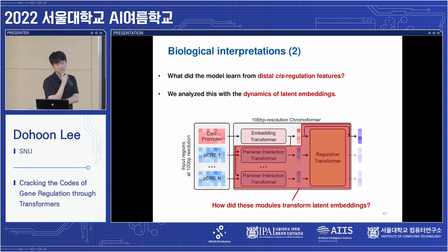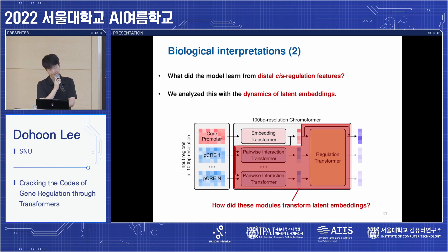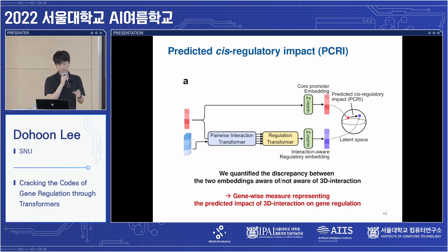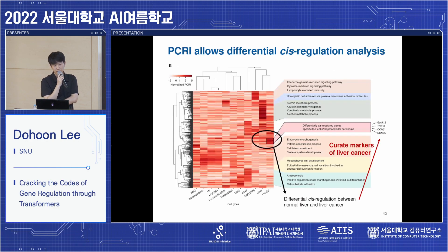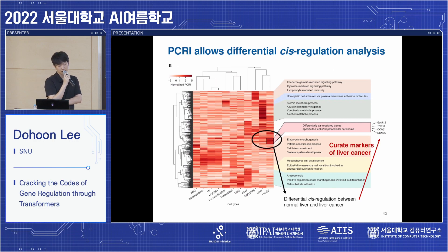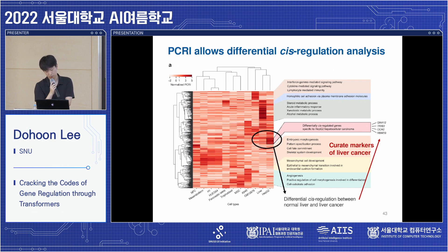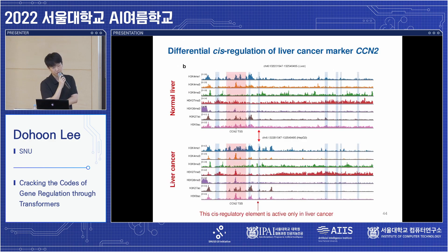Next, we analyzed what Chromoformer learned about cis-regulations by dissecting the dynamics of latent embeddings. We quantified the discrepancy between embeddings that are aware of and not aware of 3D interactions, and considered this value as a predicted cis-regulatory impact, or PCRI. Comparing PCRI values between normal liver and liver cancer cells, we identified a subset of genes and, through manual curation, found markers of liver cancers that were differentially cis-regulated. We were even able to pinpoint cis-regulatory regions that were differentially active between normal liver and liver cancer.